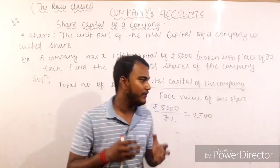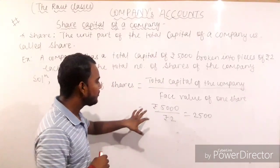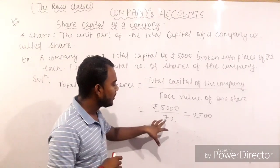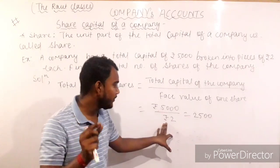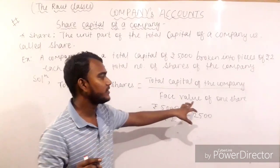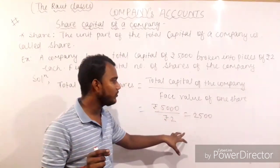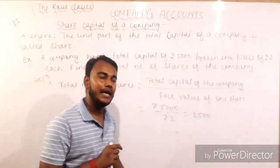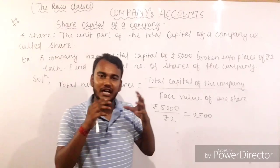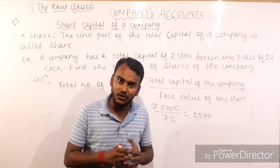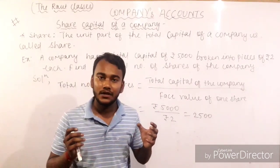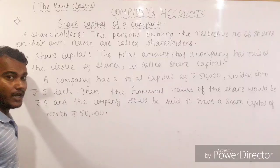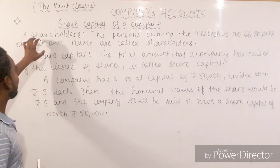In the same manner, we have to divide the total worth of the company by the face value of one share, which gives you the total number of shares of the company. Furthermore, we will be discussing about the share capital, shareholders, and the types of shares of a company. Moving towards the next topic: shareholders.